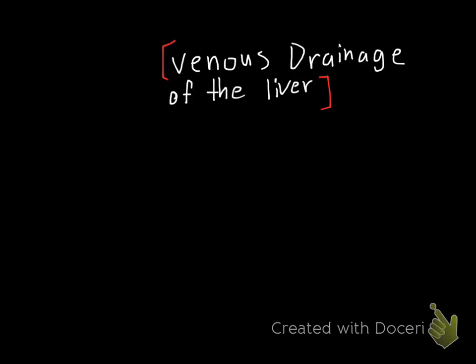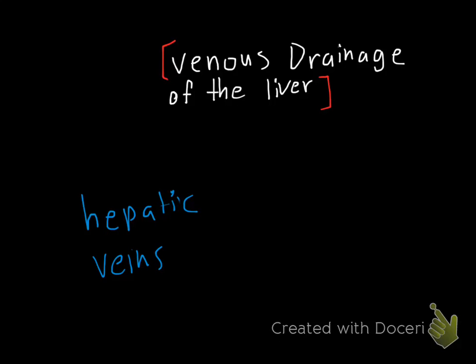Venous drainage of the liver is simply by hepatic veins, and these hepatic veins drain the liver into the inferior vena cava.